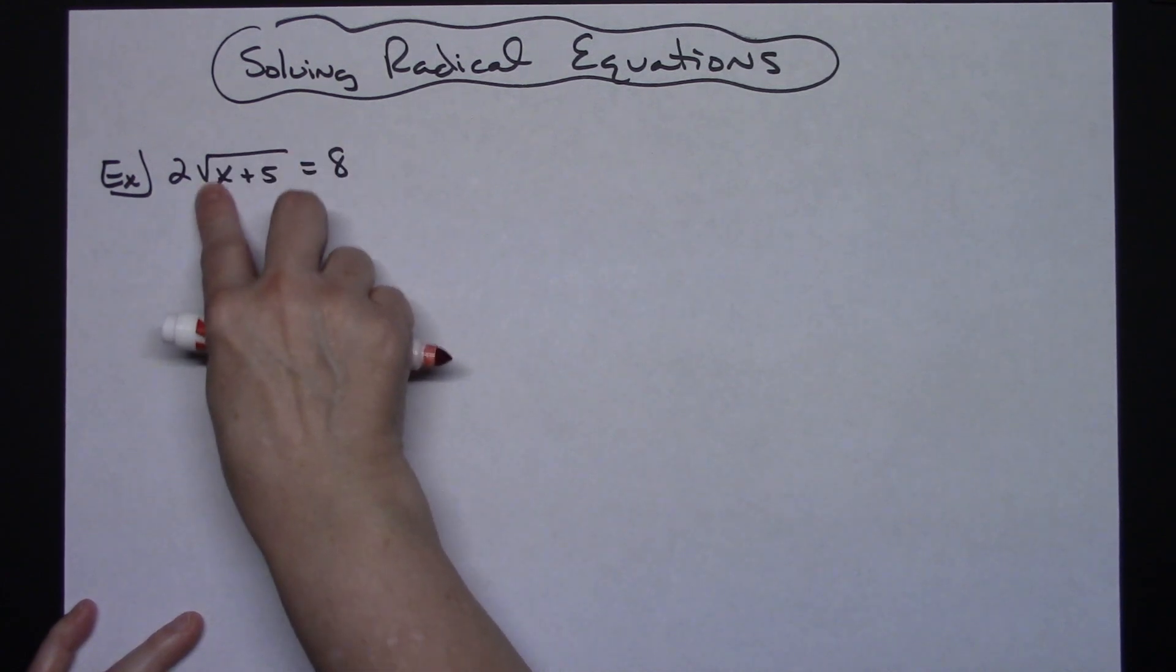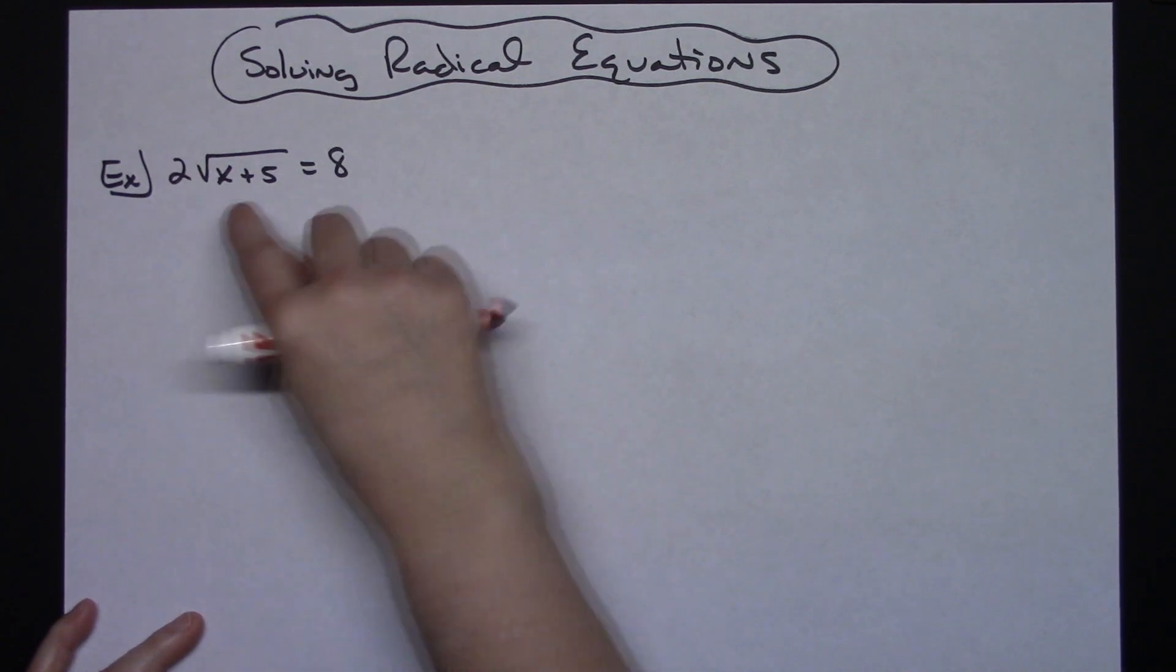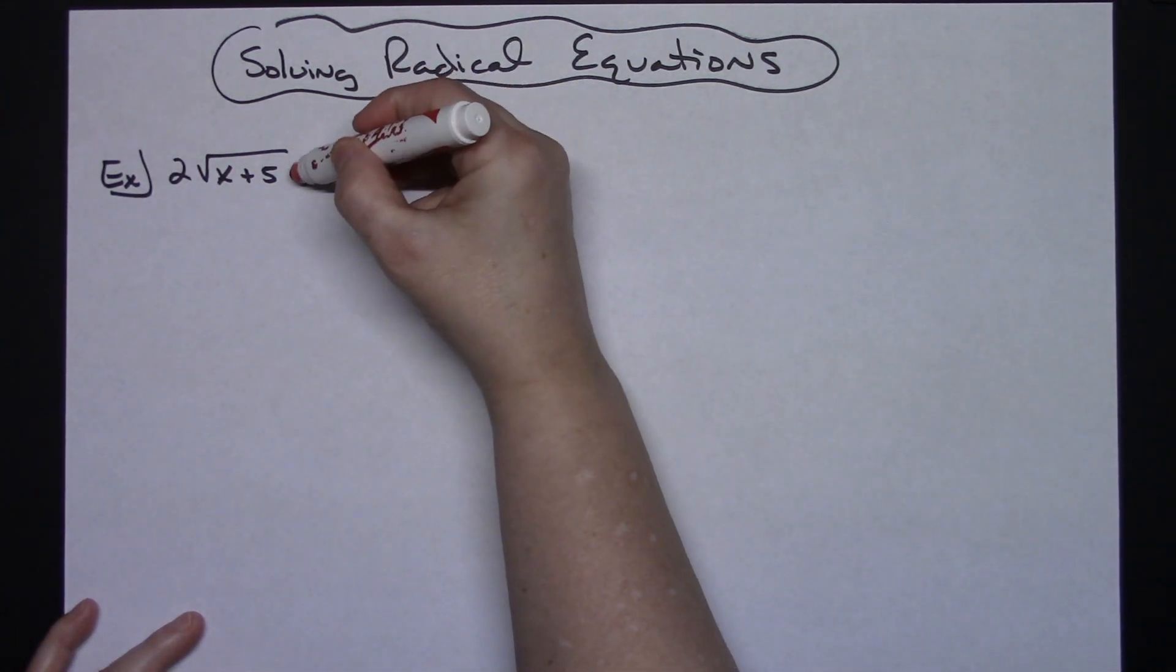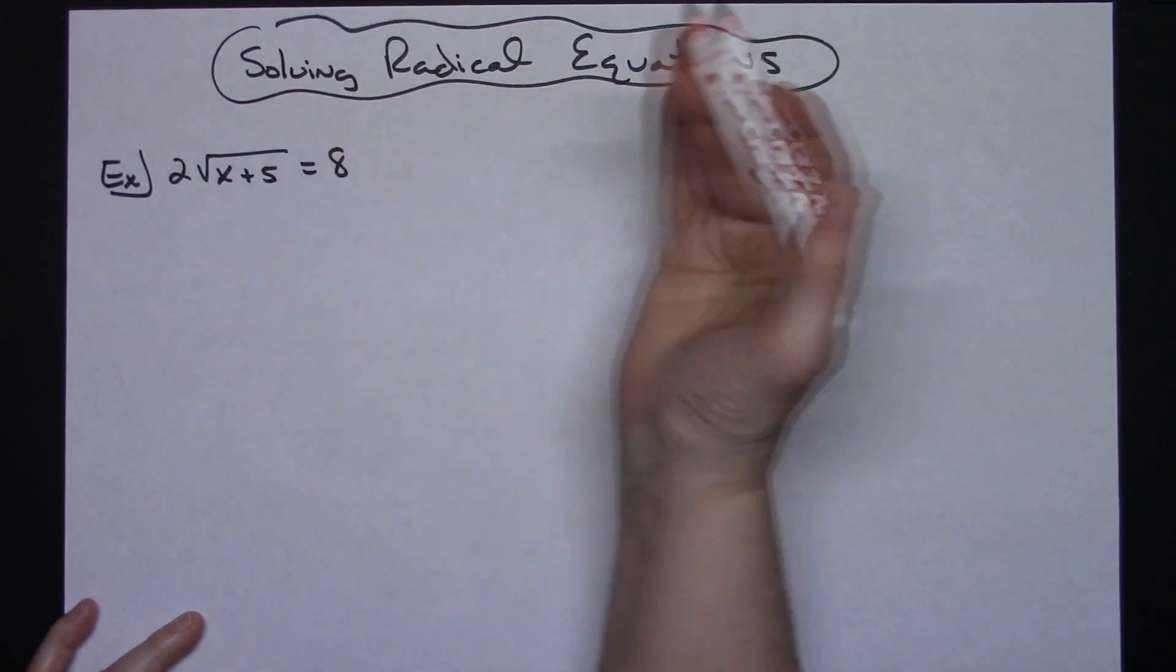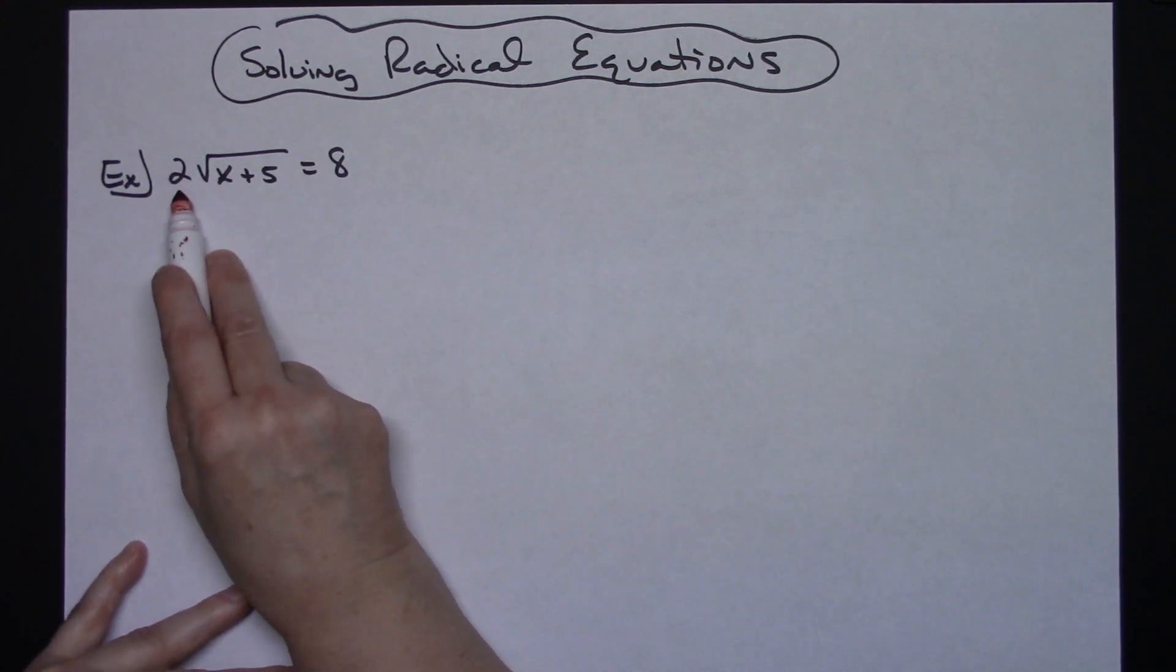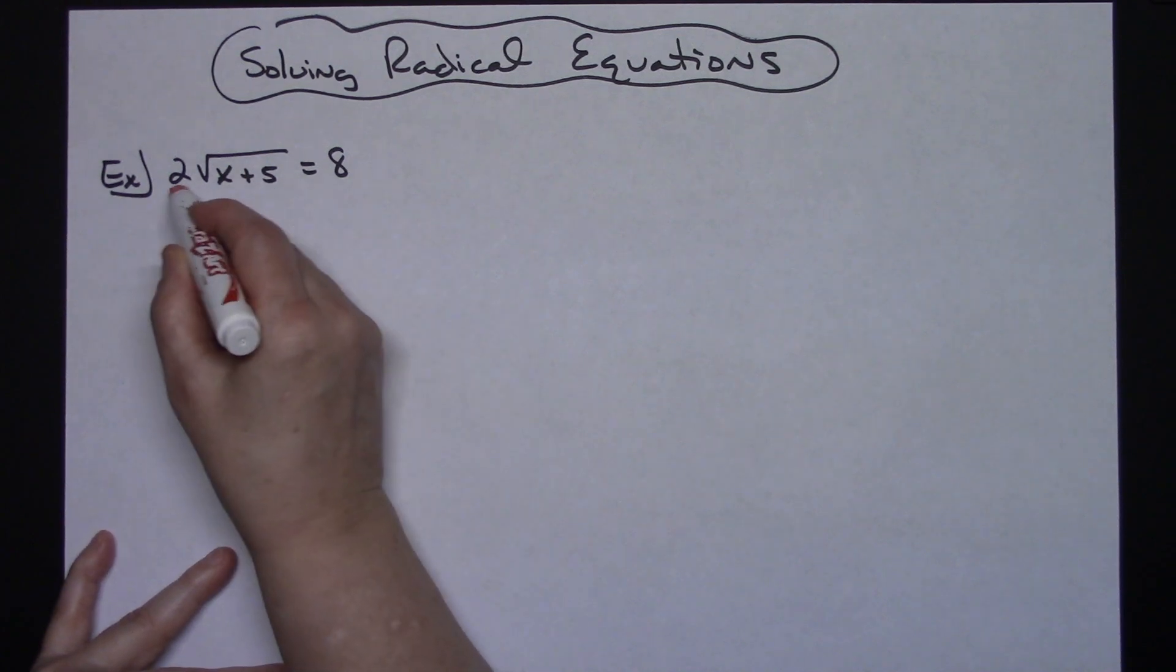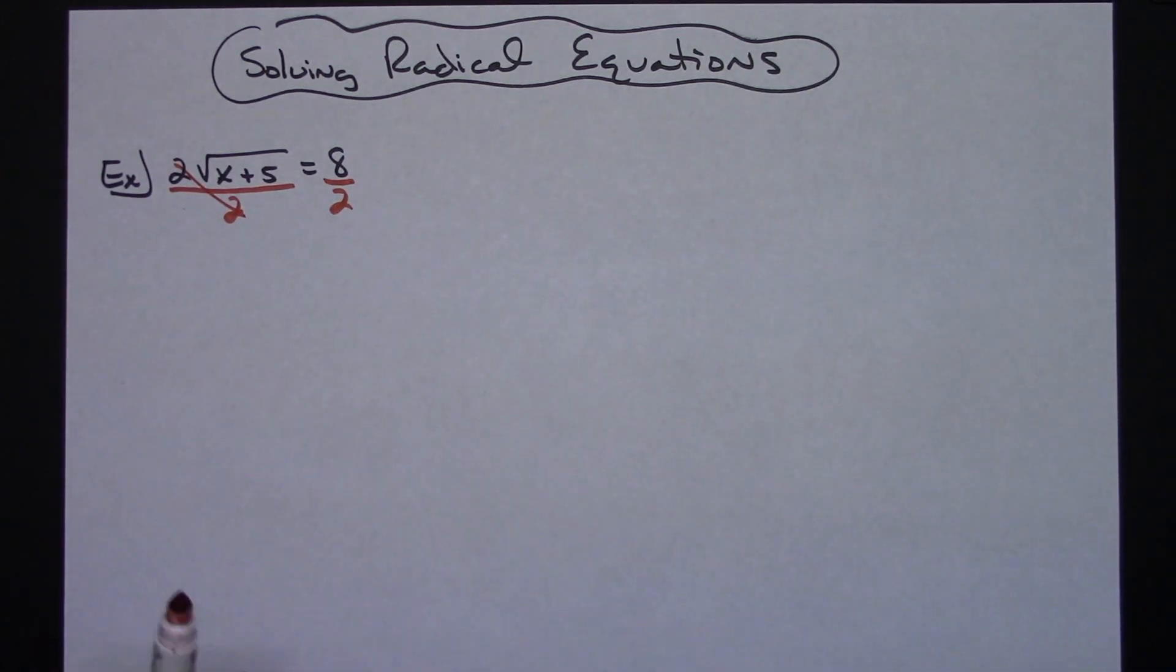...then you have probably been told that the radical has to be isolated. In other words, I can't have anything being multiplied in front of it, and I can't have anything between the radical and equal sign. I need to isolate that radical. So in this case I only have it being multiplied by 2, so I need to get rid of that 2 first. I'm going to divide both sides of the equation by 2 before I even start.